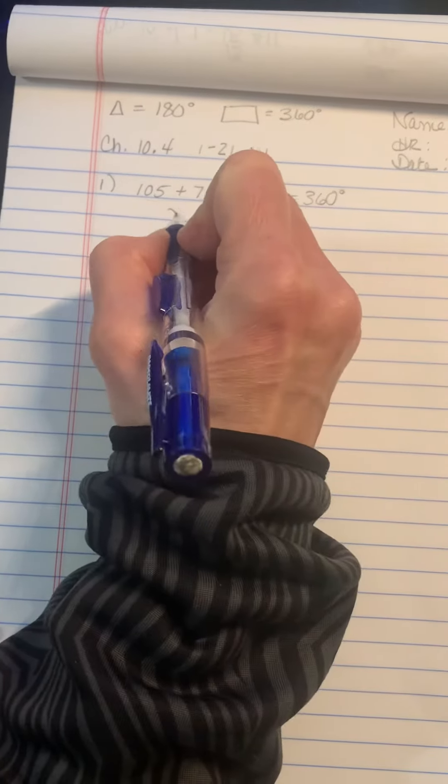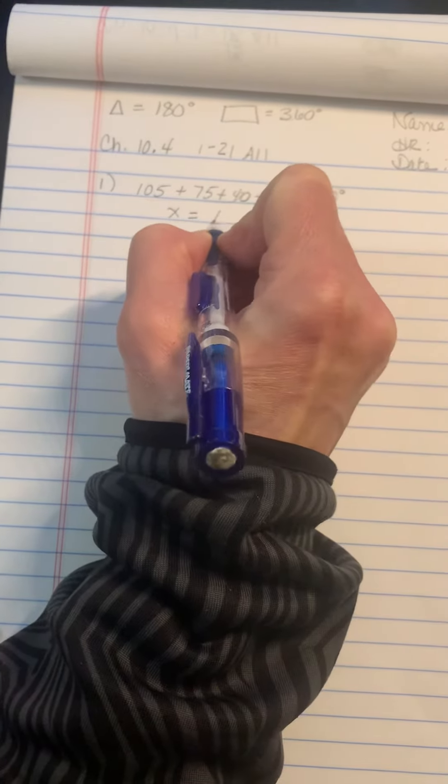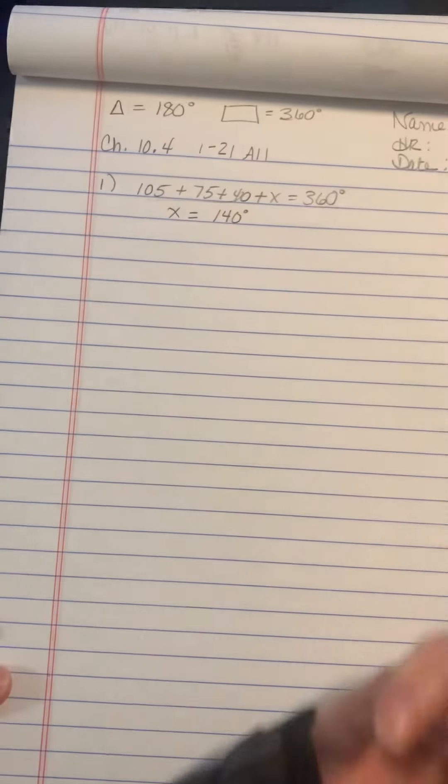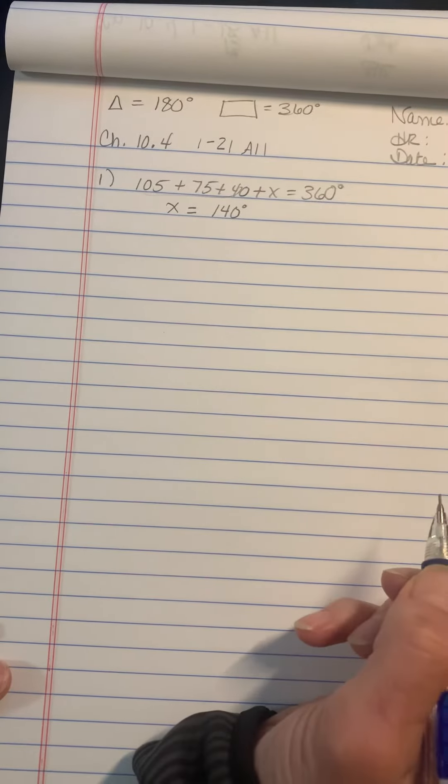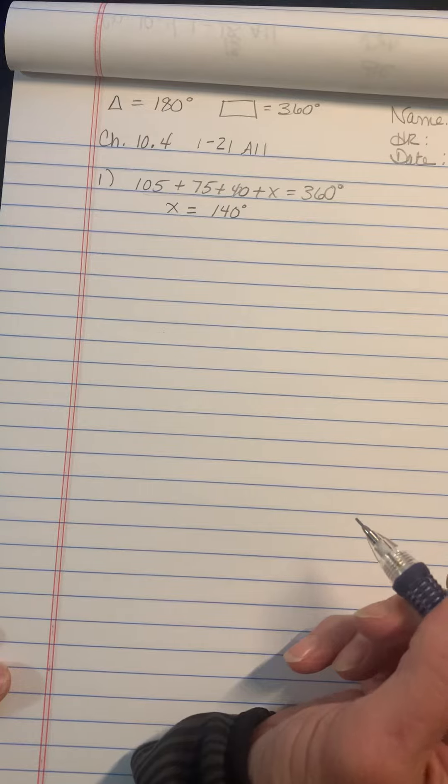Don't forget, when you put your answer down, make sure you put the degree symbol because it's not just a number, it actually means something. That's how you're going to do problems 1 through 12.